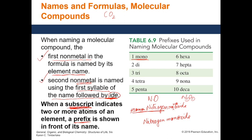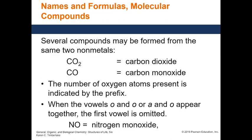Let's try naming another compound, CO2. First, identify if it's molecular or ionic. Carbon is a non-metal, oxygen is a non-metal — both are non-metals, so this is a molecular compound. The first non-metal is carbon, so we write 'carbon'. Since there is one carbon, we skip 'mono'. The second element is oxygen, which becomes 'oxide', and we have two oxygens, so the name is 'carbon dioxide'.